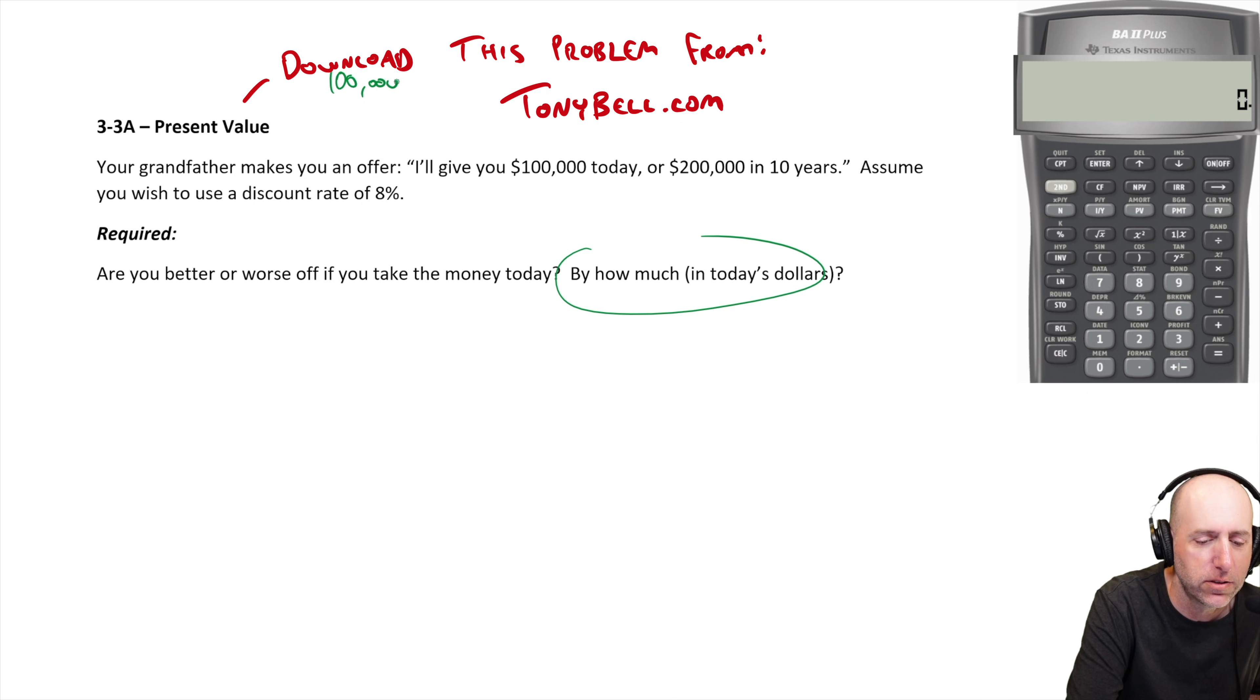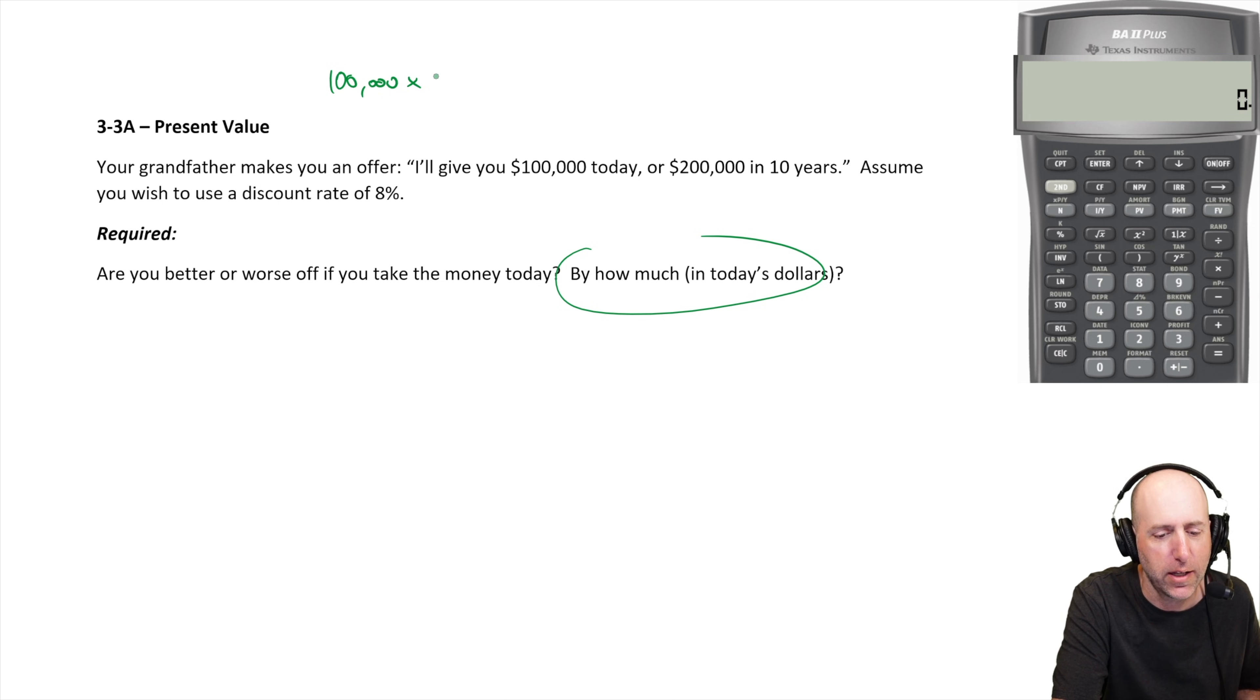okay, if he gives me $100,000 today, I can invest that at 8%, so times 1.08 to the power of 10,